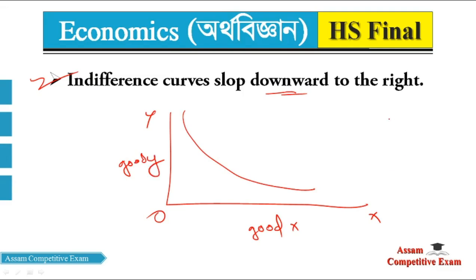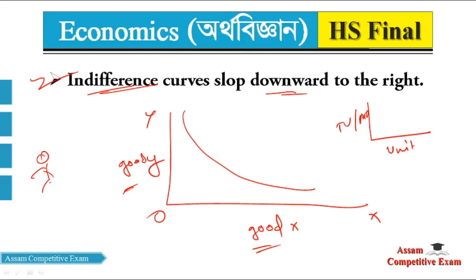Previously we discussed the concept of utility — unit, total utility, and marginal utility. There can be some confusion here. The indifference curve uses good X and good Y. A person who consumes two goods — such as apples and oranges — and their satisfaction is represented by the indifference curve.